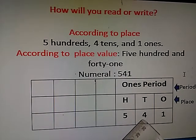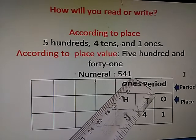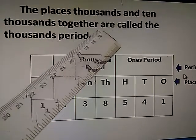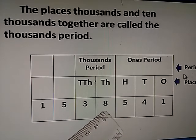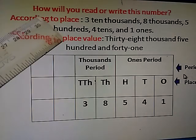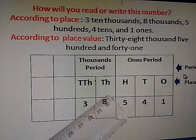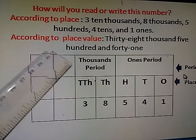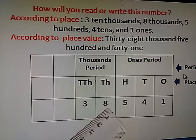In the hundreds place there is 5, in the tens place 4, and 1 in the ones place — numeral: five hundred forty-one. Then we will see the places thousands and ten thousands, together called the thousands period. In the thousands place the number is 8, in the ten thousands place the number is 3. According to place value: three ten-thousands, eight thousands, five hundreds, four tens, and one ones — that is thirty-eight thousand, five hundred and forty-one.